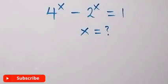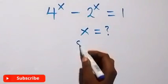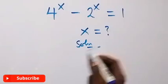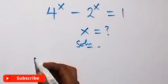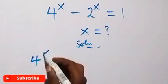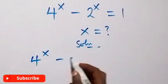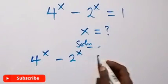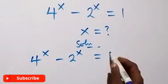Hello, you are welcome to solve for x in this estimation equation. From what is given here, which is 4 raised to power x minus 2 raised to power x equals to 1.